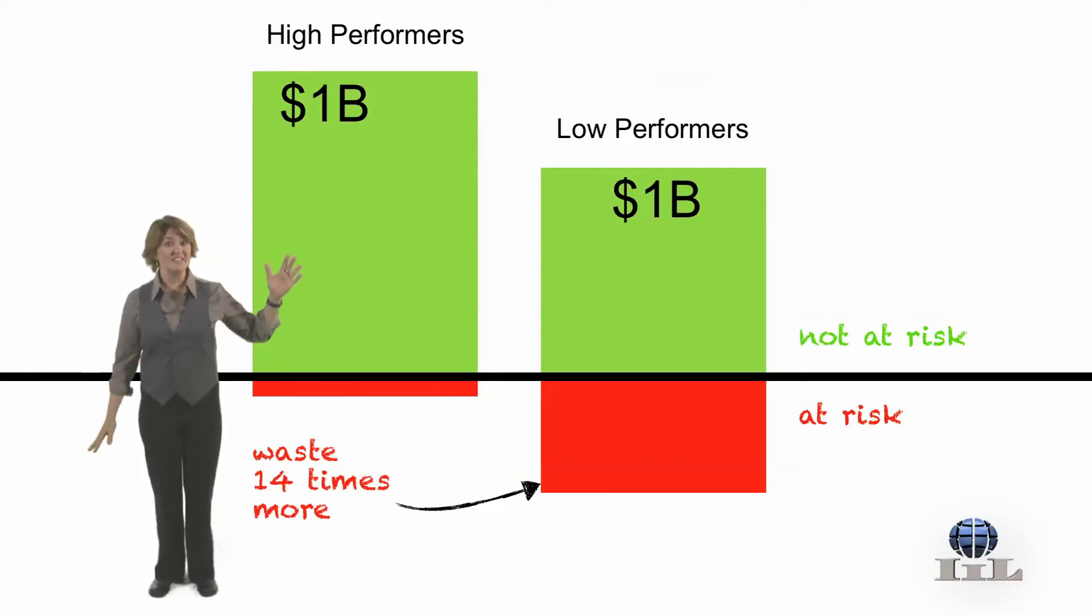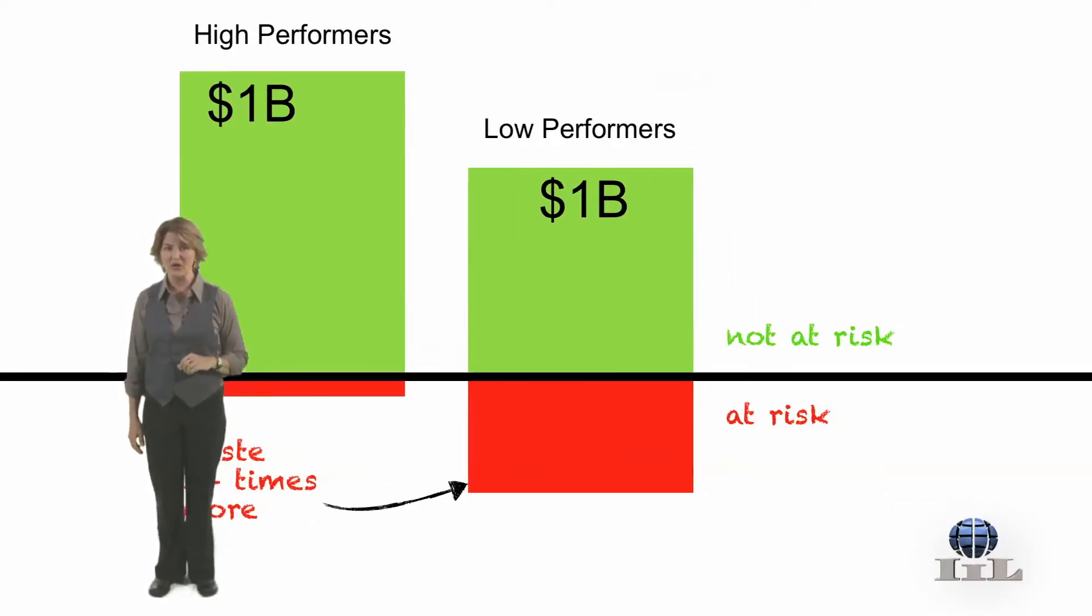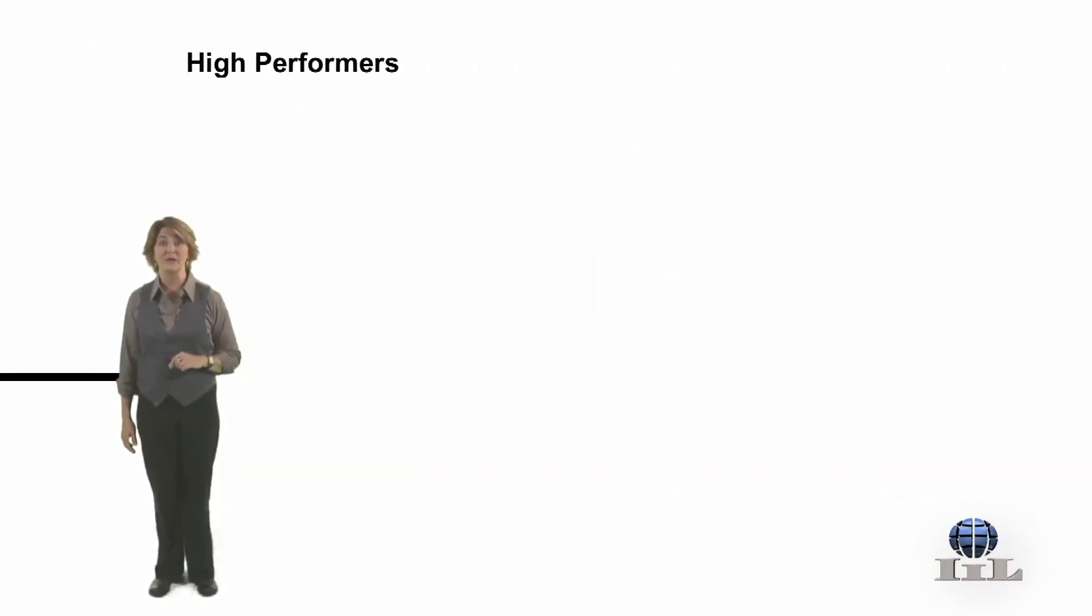Low performers risk wasting 14 times more money on projects than high performers. So let's take a look at what characterizes a high-performing organization.